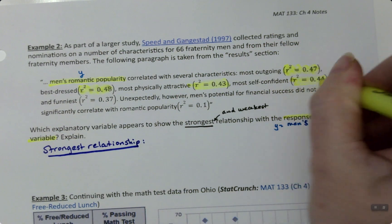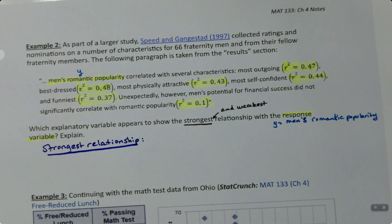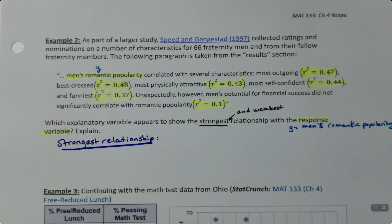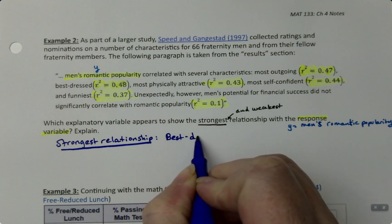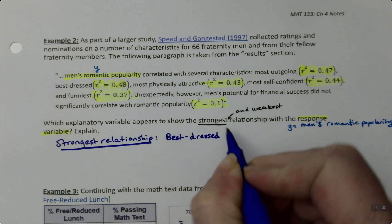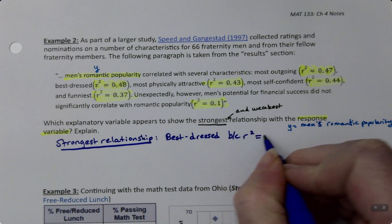The strongest relationship: we have R-squared of 0.47, 0.48, 0.43, 0.44, 0.37, and 0.1. So the strongest relationship is 0.48—that's best dressed, because the R-squared value of 0.48 is the highest or largest value.